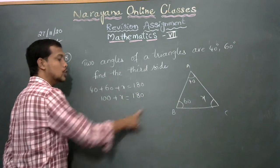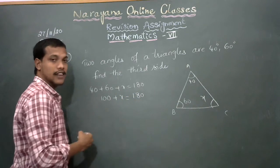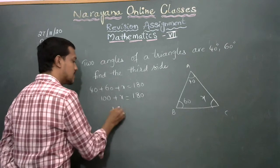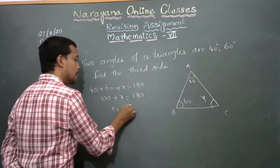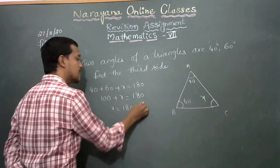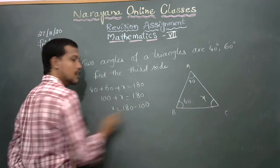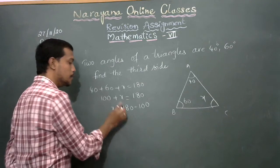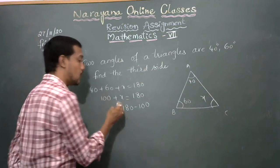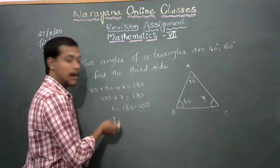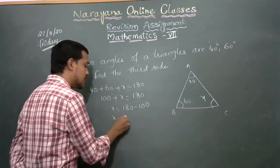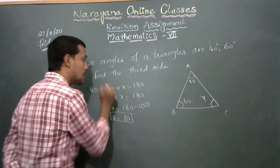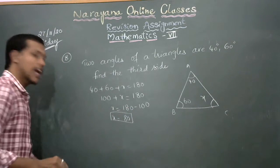Bringing 100 to the right-hand side: x equals 180 minus 100, therefore x equals 80. So the third angle is 80 degrees.